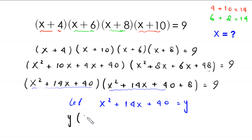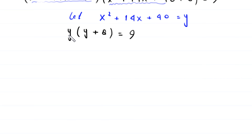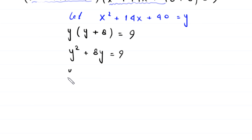Distributing y gives y²+8y = 9. Moving 9 to the left hand side, this becomes y²+8y−9 = 0. Now this is our quadratic equation and it is factorable.